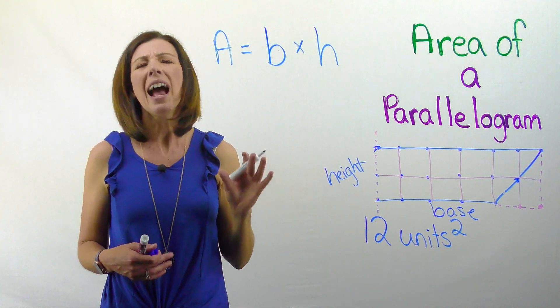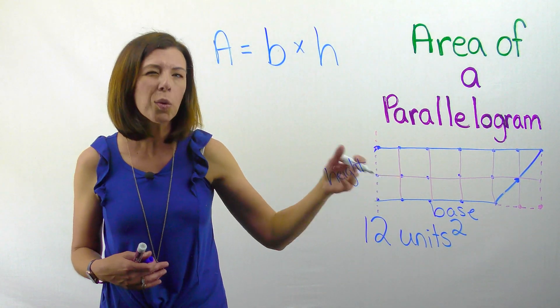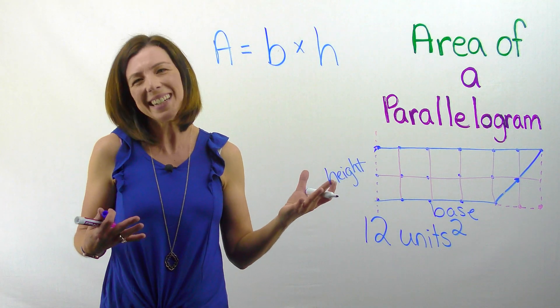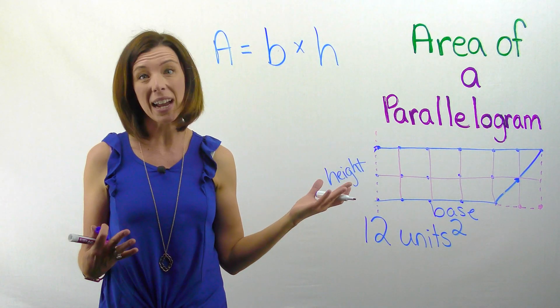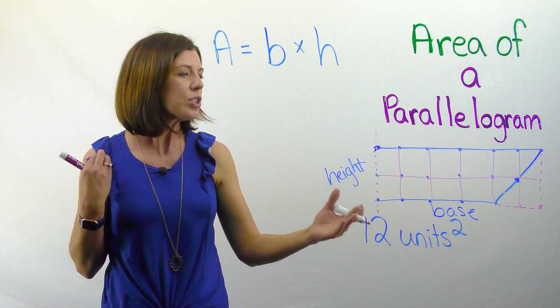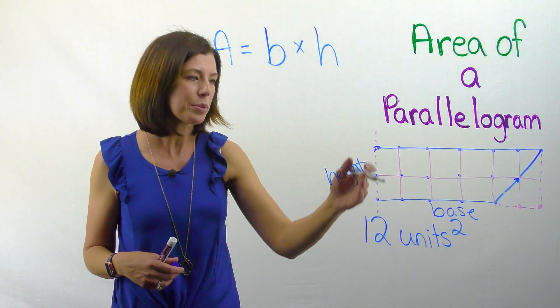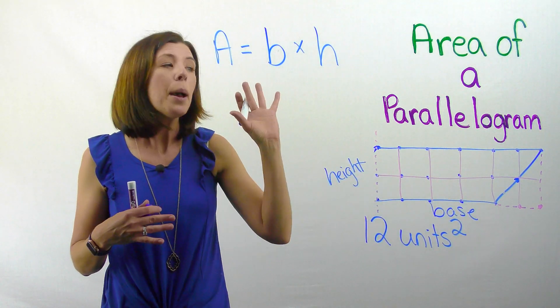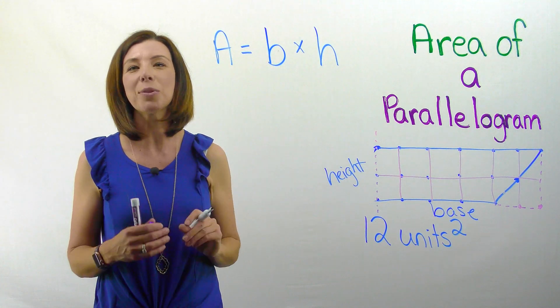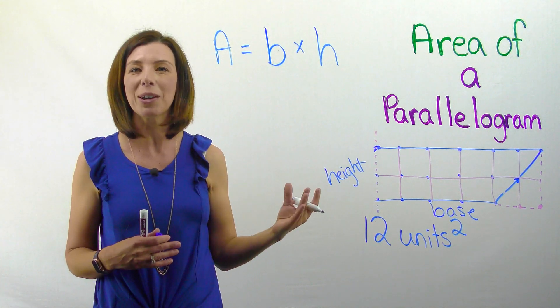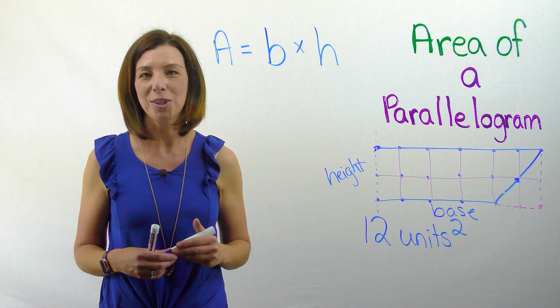Now you might be saying to me, wait a minute, I thought the area of a rectangle was length times width. Is length times width the same as base times height? It is, right? So sometimes we call this the length, sometimes we call this the width, it doesn't really matter. But the reason we're going to use base times height is because it's going to be easier to think about this when we go on to our other shapes.